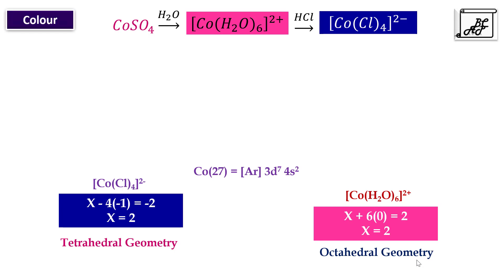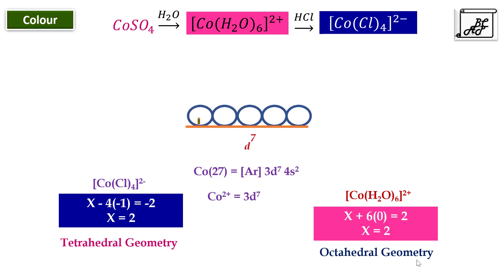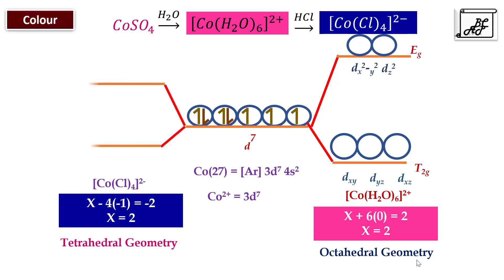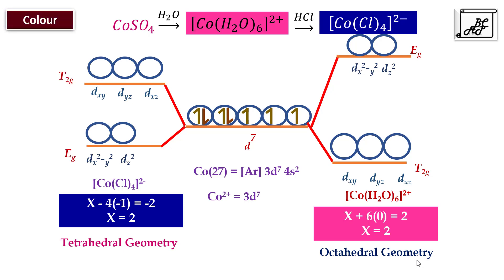With a d⁷ configuration, seven electrons are placed in the five d orbitals. In [Co(H₂O)₆]²⁺ — an octahedral environment — the d orbitals split into lower T2g and upper Eg levels. In [CoCl₄]²⁻ — a tetrahedral environment — the d orbitals split into lower Eg and upper T2g levels. In octahedral geometry, ligands attack along the axes and exert more effect on the Eg orbitals. In tetrahedral geometry, ligands attack between the axes and exert more effect on T2g orbitals, since T2g orbitals lie between the axes and Eg orbitals lie along the axes.